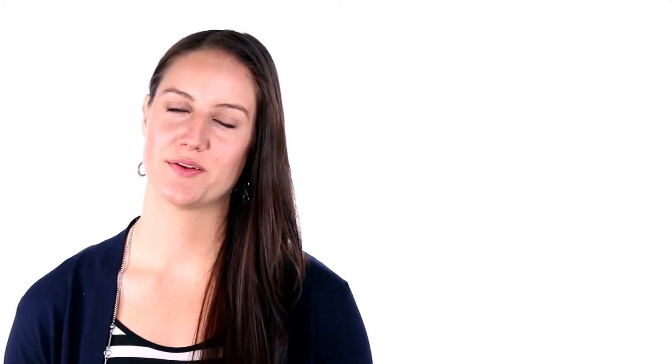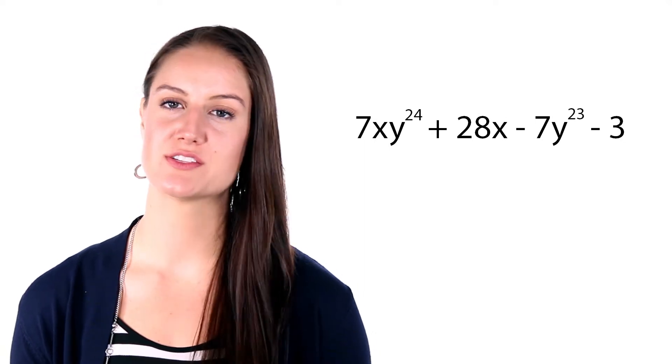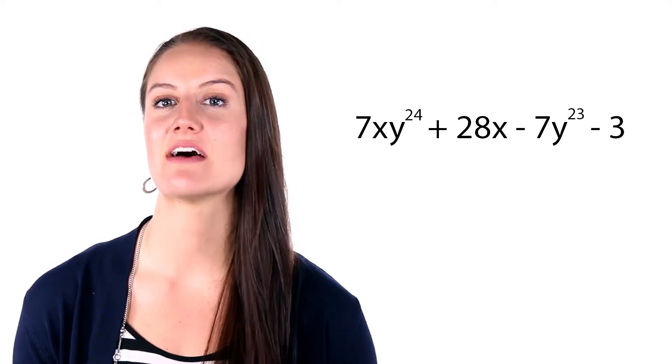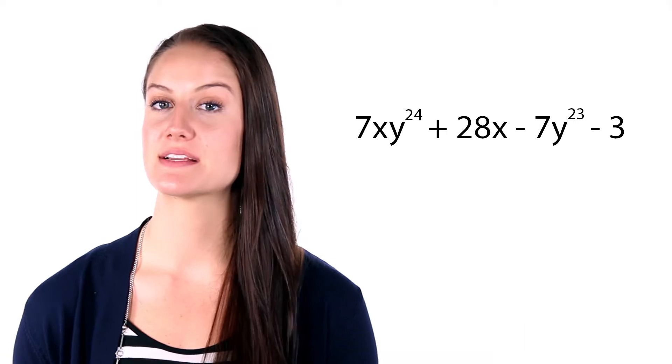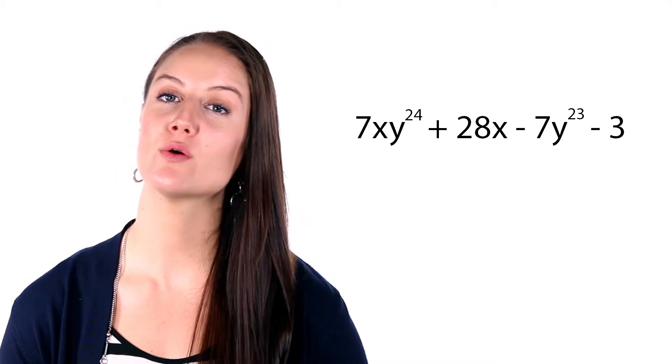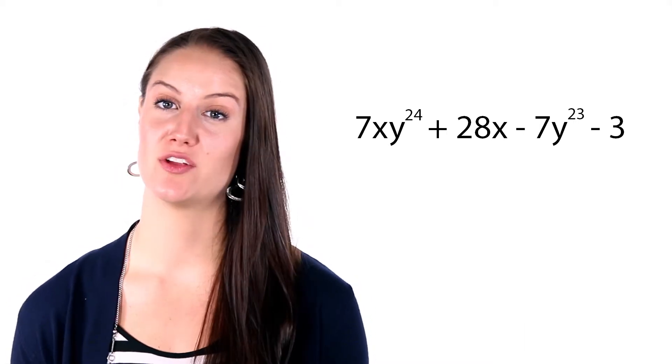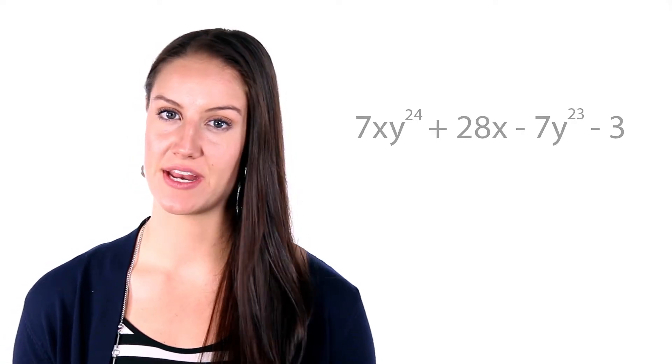Now, try this one. 7xy to the 24th plus 28x minus 7y to the 23rd minus 3. Polynomial or not? This is a polynomial. It does not have a variable in the denominator.